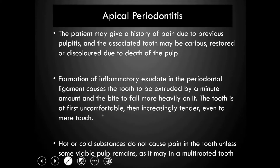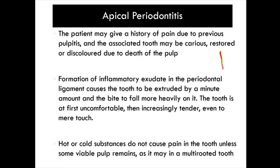The first condition is acute apical periodontitis. The patient may give a history of pain due to previous pulpitis, and the associated tooth may be carious, restored, or discolored due to death of pulp. After pulpitis, the infection spreads from the pulp through the apical foramina into the periapical space, causing inflammation of the periapical periodontal ligament.